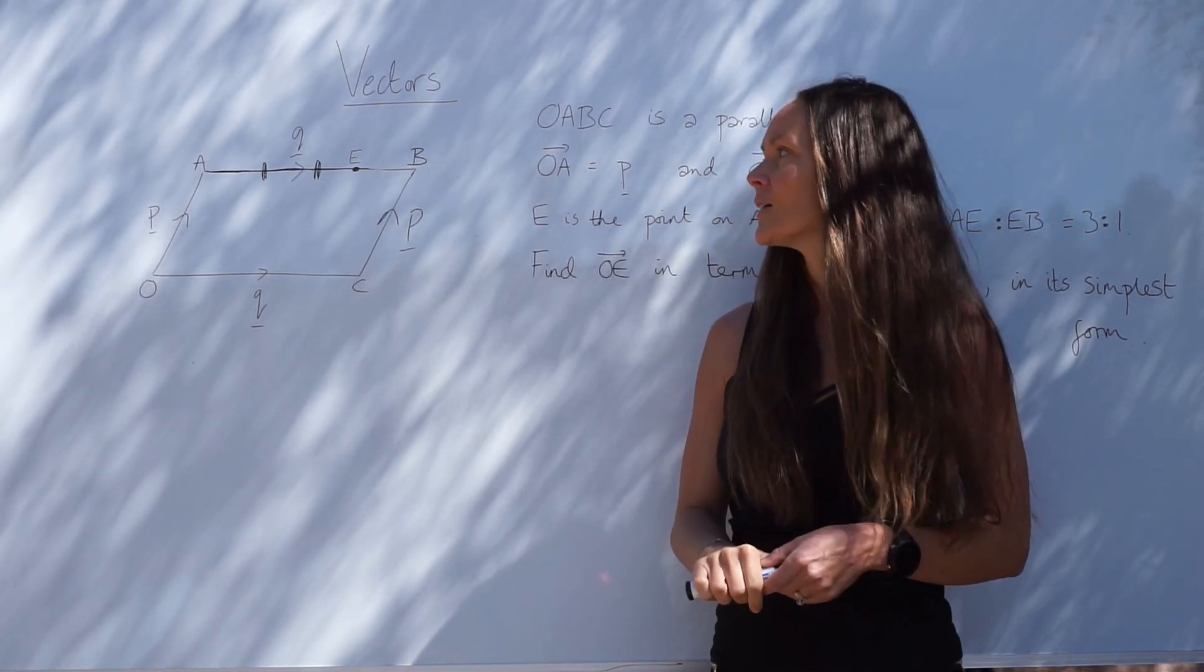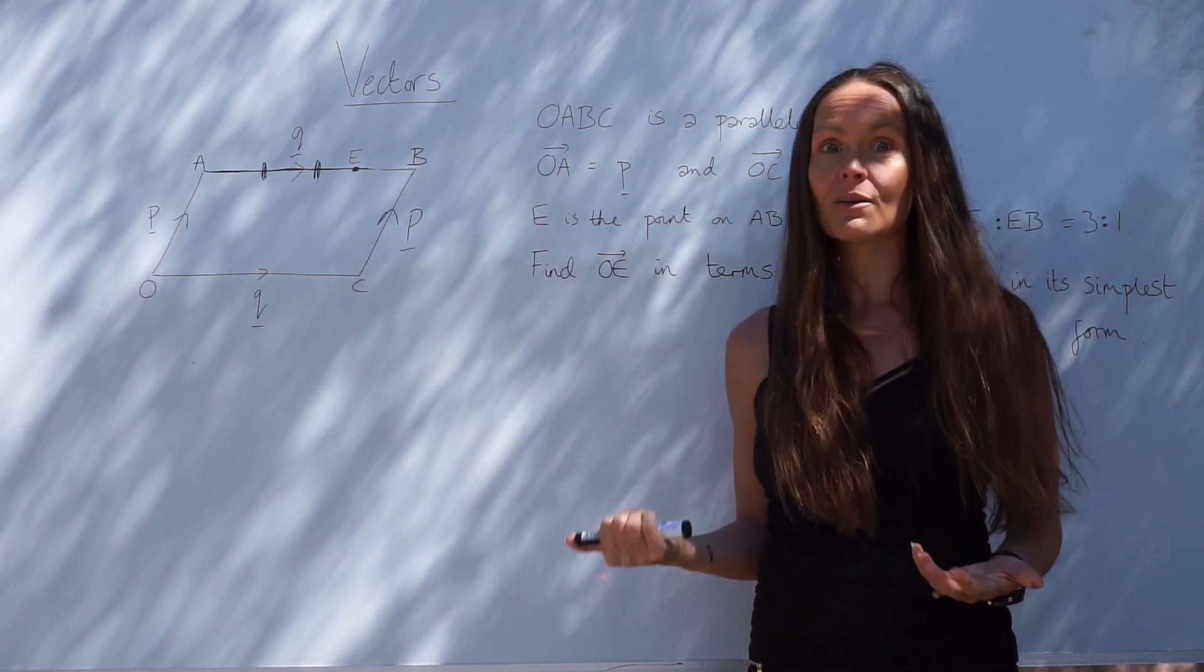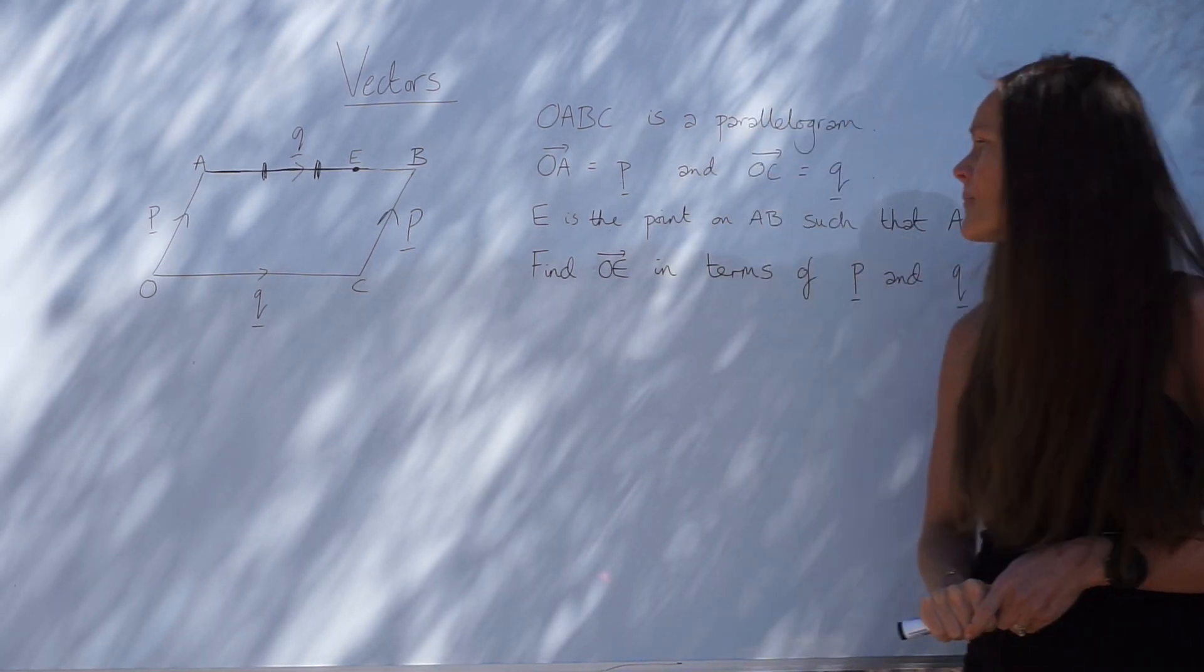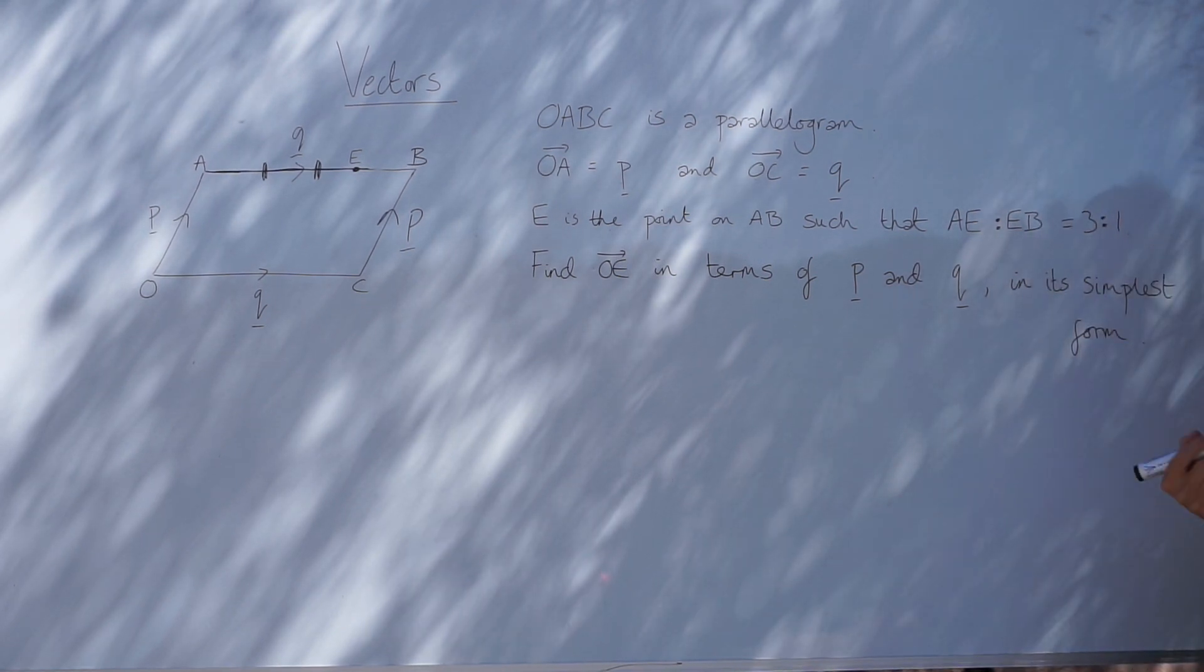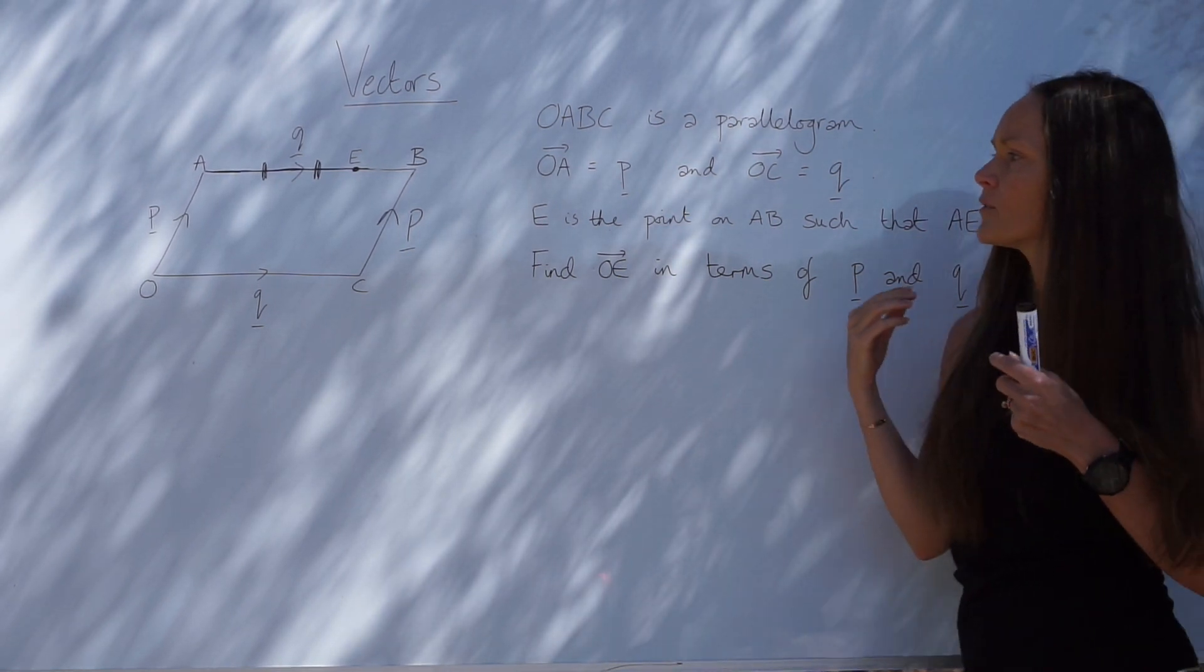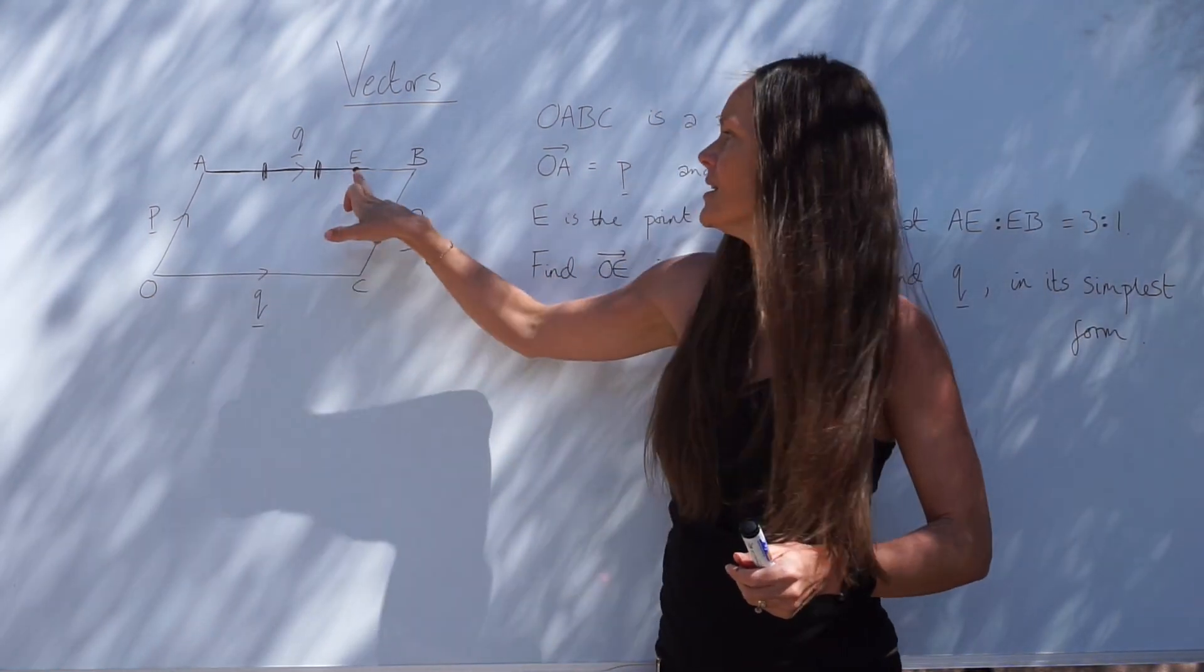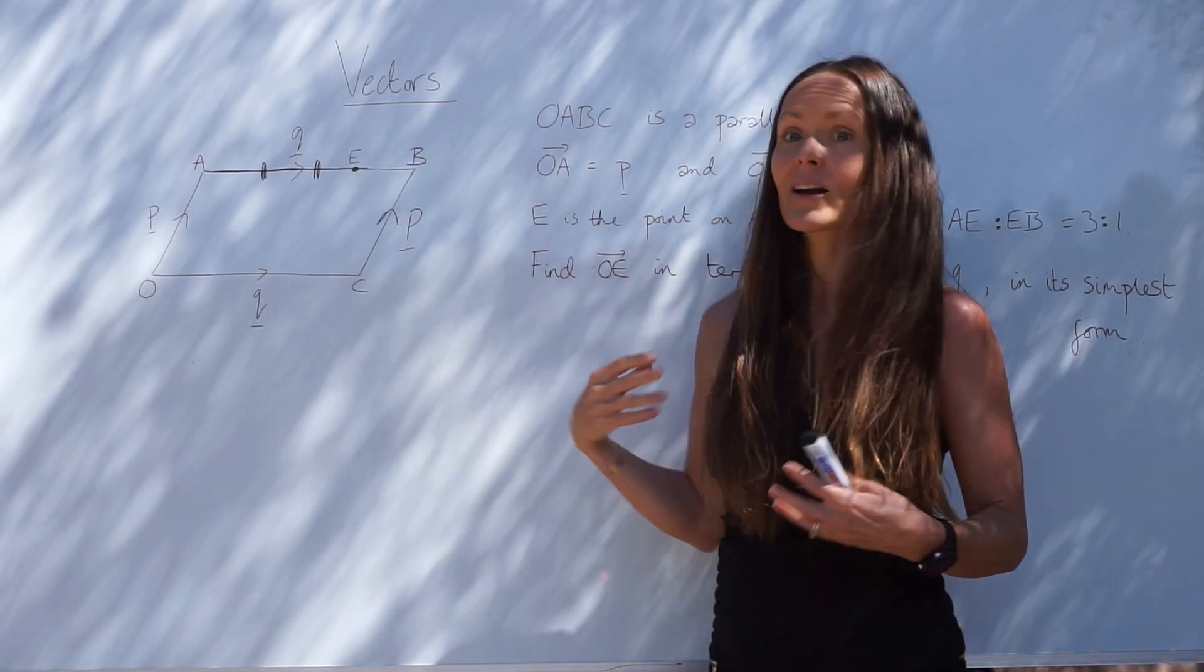That will make things a lot easier, especially when you get onto more difficult vector exam questions. So we have to find OE in terms of P and Q in its simplest form. So we have to travel from O to E and work out the vectors.